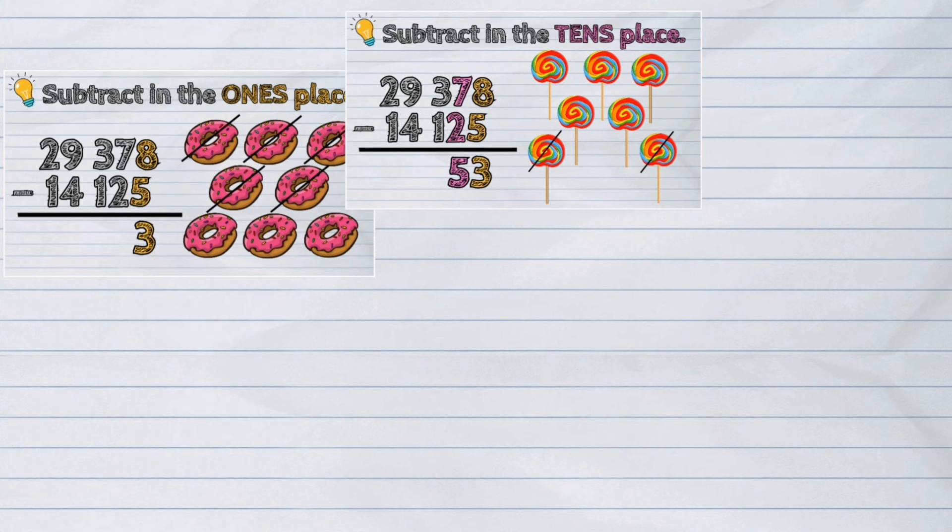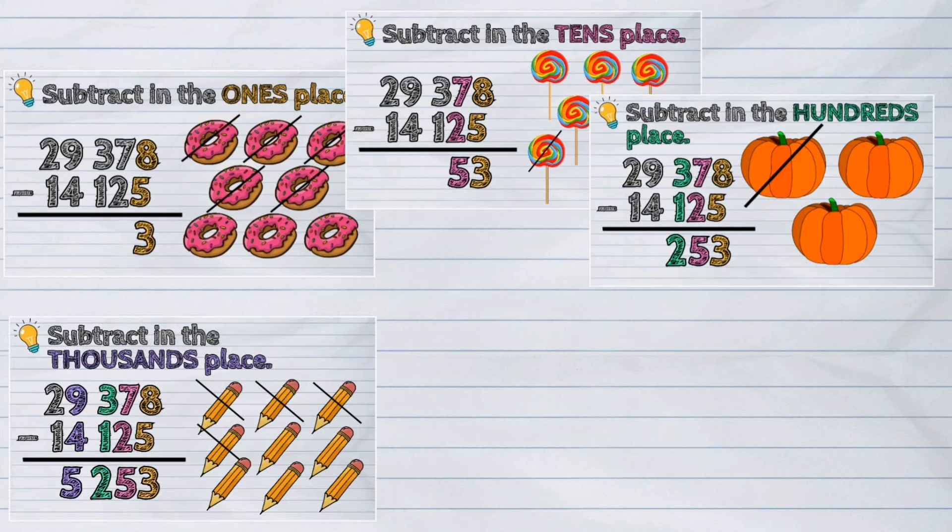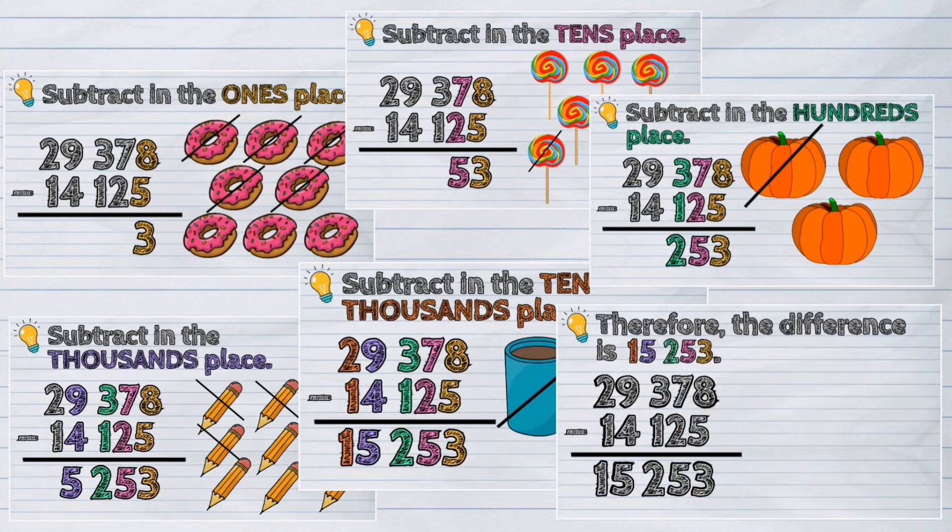Subtraction in mathematics means that we take something away from a group or number of things. That is why when we subtract, what is left in the group becomes less.